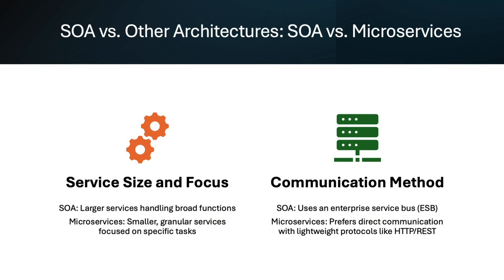SOA and microservices both decompose applications into smaller components. SOA involves larger services handling broad functions, while microservices are smaller and focused on specific tasks. SOA uses an enterprise service bus for communication, whereas microservices prefer direct communication using lightweight protocols like HTTP REST.